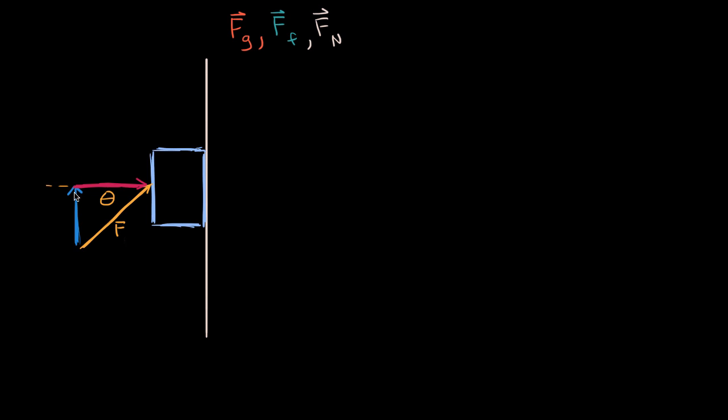And so what's the magnitude of the vertical component? Well, it is opposite this angle that we know. This is the angle that is theta. And so the vertical component is going to be F sine of theta.